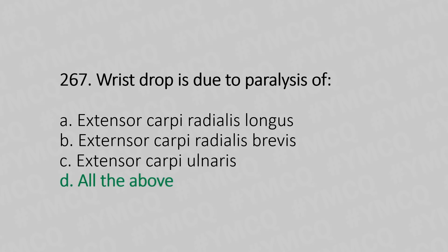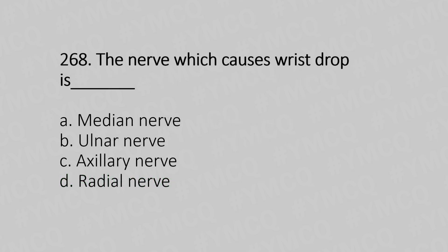Now let's move to question number 268. The nerve which causes wrist drop is: Option A, Medial Nerve; Option B, Ulnar Nerve; Option C, Axillary Nerve; Option D, Radial Nerve. And the answer is Option D, Radial Nerve.